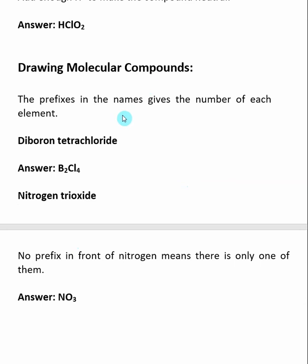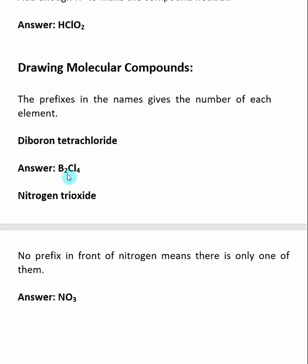Drawing molecular compounds is probably the easiest because the name gives both elements involved and tells you how many of each element are in the compound via the prefixes. For diboron tetrachloride, the two elements are boron (B) and chlorine (Cl, from removing the -ide ending to get chlor-). Di- means two borons, and tetra- means four chlorines, so the molecular formula is B2Cl4.